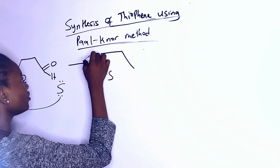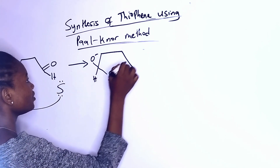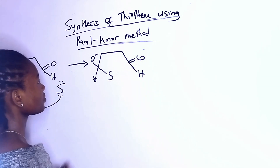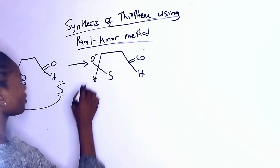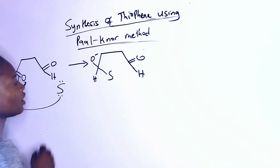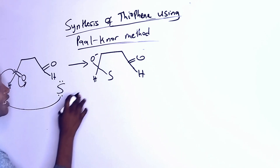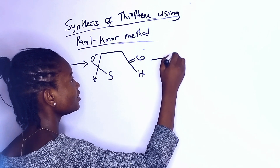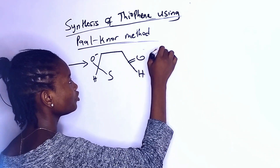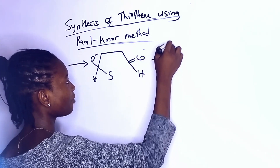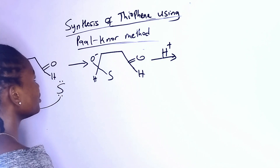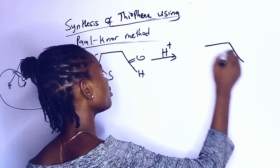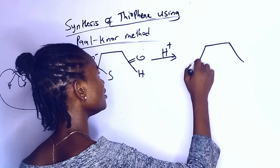We are going to have an oxygen minus. Now if we protonate this compound — the presence of a hydrogen ion — it is going to give us a compound like this.